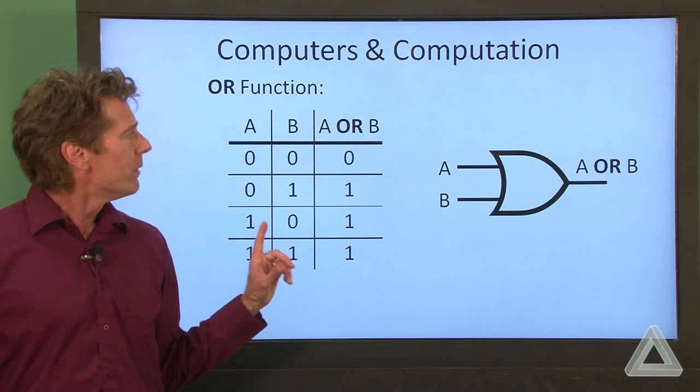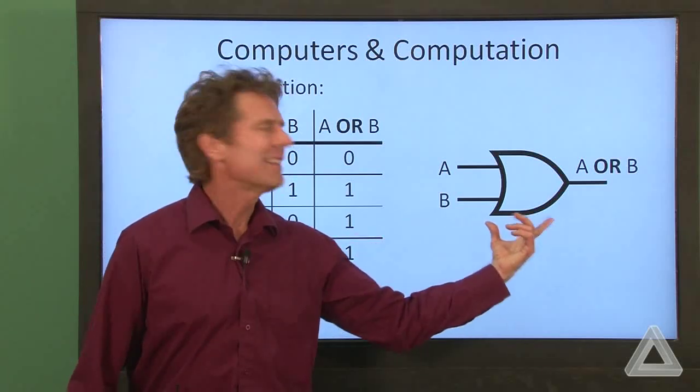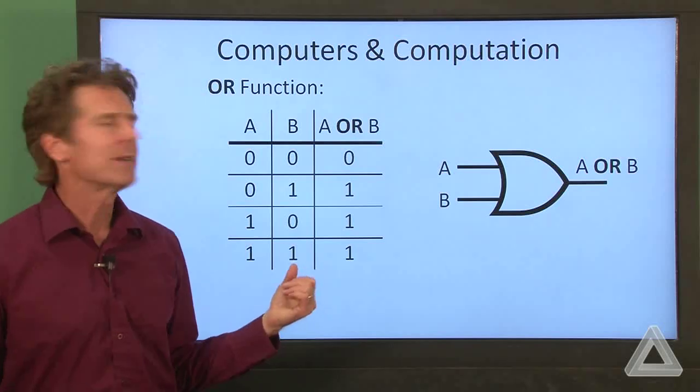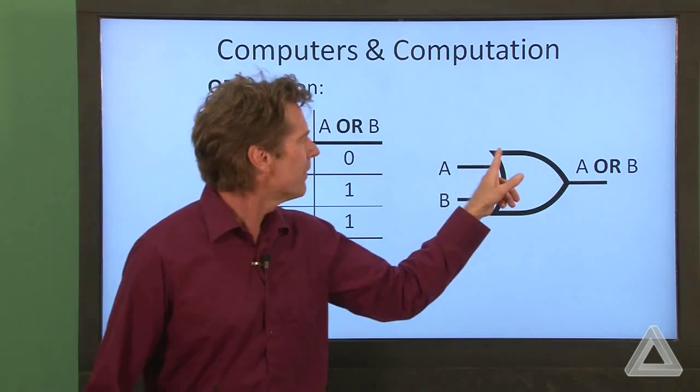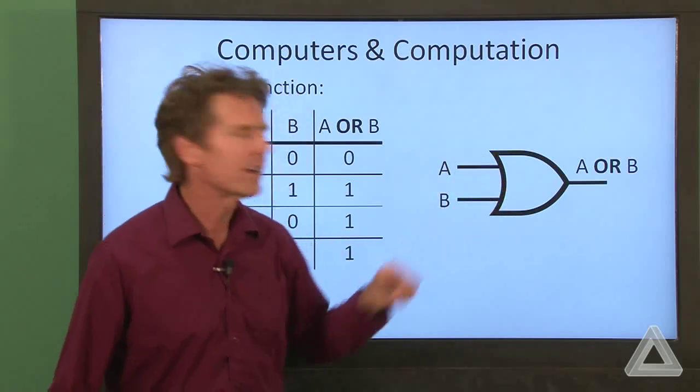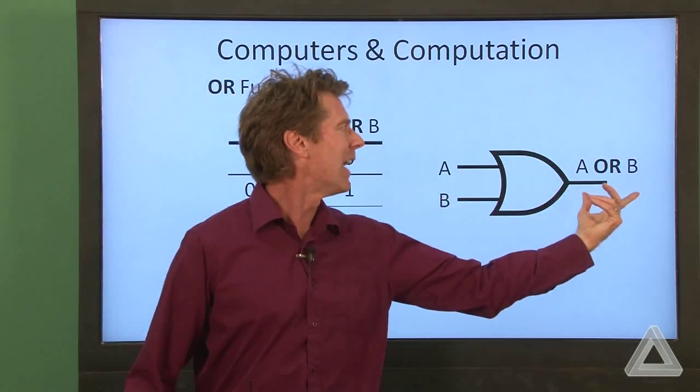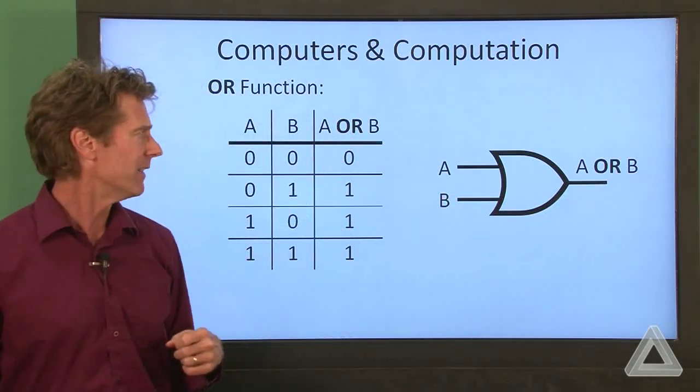And we represent this function sometimes in drawings using this symbol. This is sometimes called a gate. So we have this curvy side here, kind of think of that as the arc of an O for OR. The two inputs here and the output on the other side of that gate.